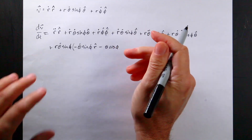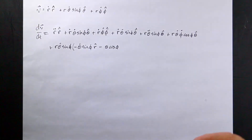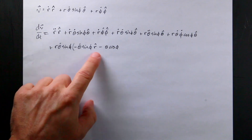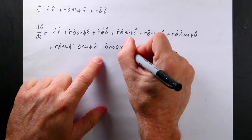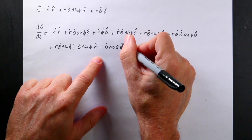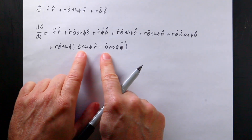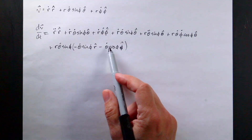I think that should be theta-dot — and yes, that's theta-dot phi-dot. I caught that because I know this is a time derivative, so it needs a time element. Theta-dot is radians per second, while theta alone is just radians, so I knew I was missing a dot.